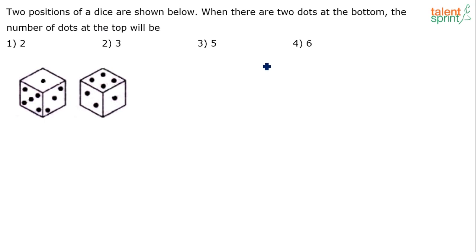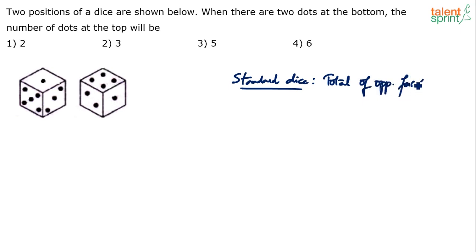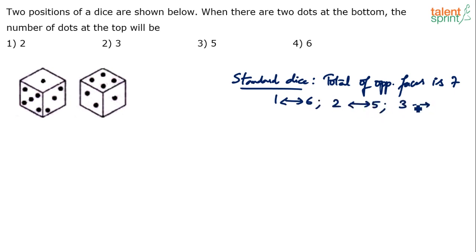That shortcut being: the total of opposite faces has to be seven. That is only true for a standard dice. In a standard dice, the pairs are one and six, two and five, and three and four. So opposite faces are one-six, two-five, and three-four.